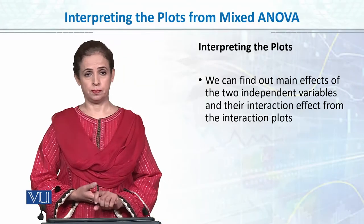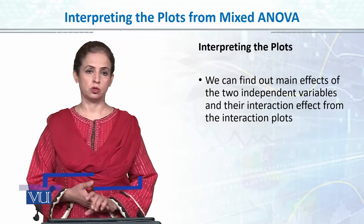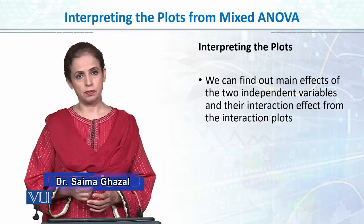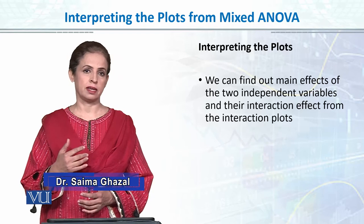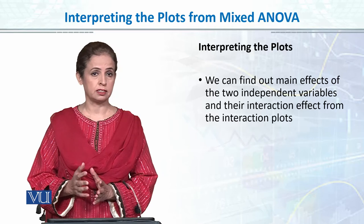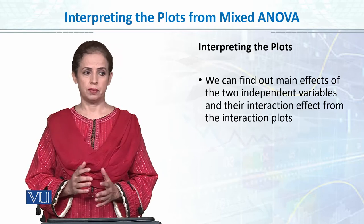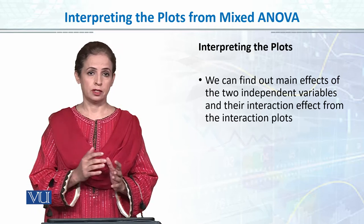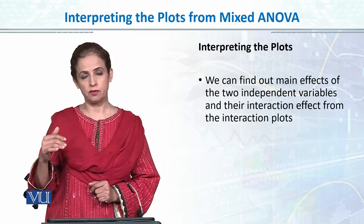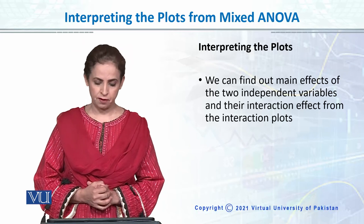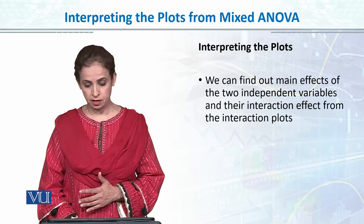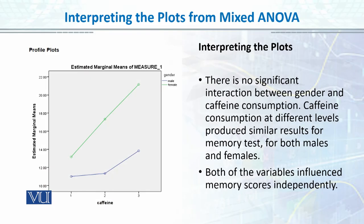The next step is to look at the interaction plots to find out how both variables are interacting. We have our F value and P value, and we have seen that in this case the interaction was significant. The graph gives us a real picture that in both conditions our within variable is behaving differently. We can find out main effects of the two independent variables and their interaction from the interaction plots.